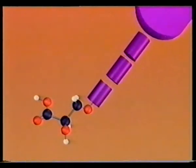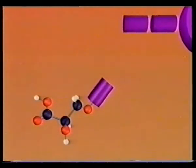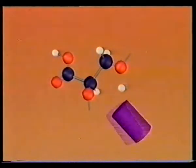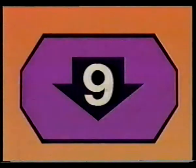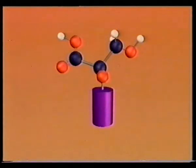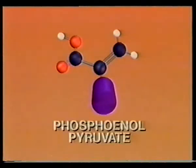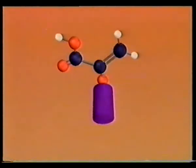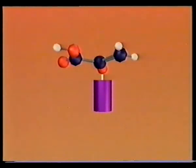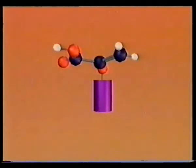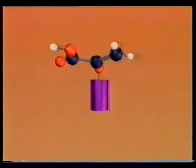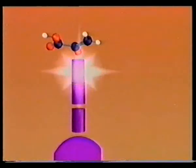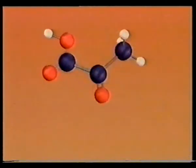On its own, ADP lacks the necessary energy to capture the phosphate. So, a subtle rearrangement of the molecule occurs. Then, in reaction nine, a molecule of water is lost, leaving phosphoenolpyruvate, or PEP. The bond holding the phosphate is sufficiently weakened so that in the final reaction, ADP liberates the phosphate and makes ATP, and the three-carbon compound pyruvate.